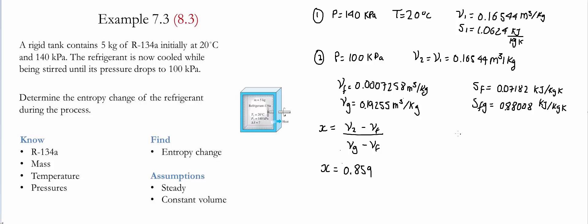Using this value of the quality we can find the entropy at the final state by using the entropy of the liquid plus the quality times the difference between the vapor and liquid entropies. Using the values on the table we find that the final entropy is 0.8278 kilojoules per kilogram Kelvin.